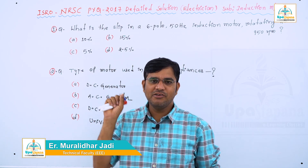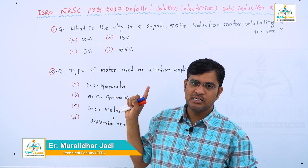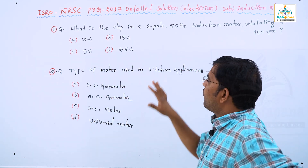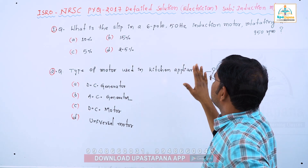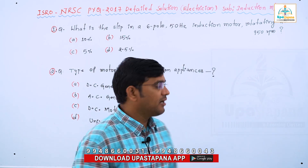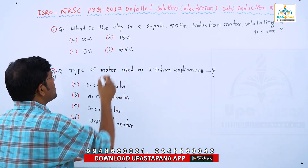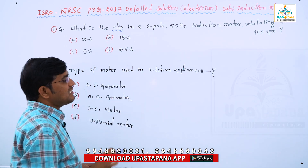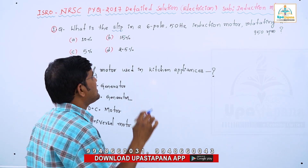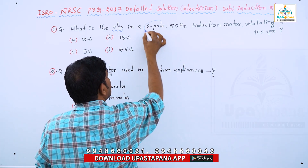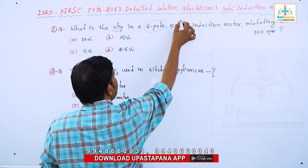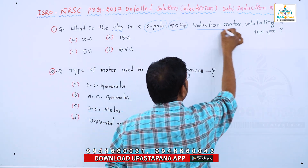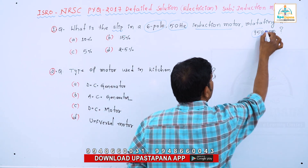Trade: electrician subject — induction machines. First question: what is the slip in a six-pole, 50 Hz induction motor rotating at 950 RPM?